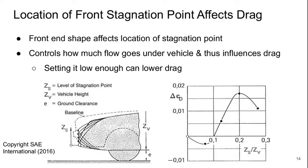The location of the front stagnation point on the vehicle also affects the drag. This is essentially determined by the shape of the front end. Basically, where that stagnation point is controls how much flow goes under the vehicle and thus influences the overall drag generated.